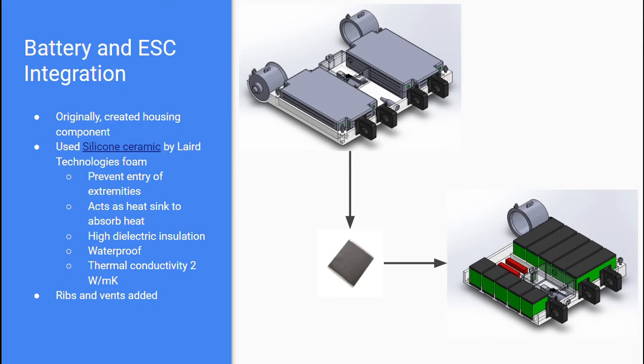Additionally, ribs inside the chassis were constructed to hold the batteries, ESCs, and foam together without falling apart. Vents were also installed in the chassis to emit heat, and charging ports were installed on the back side of the chassis to charge the batteries when not used.